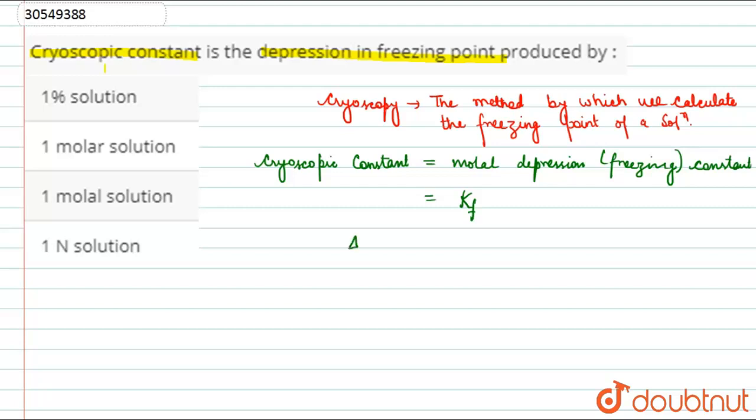So kf, delta tf value is the value. Delta tf is equal to kf into m.